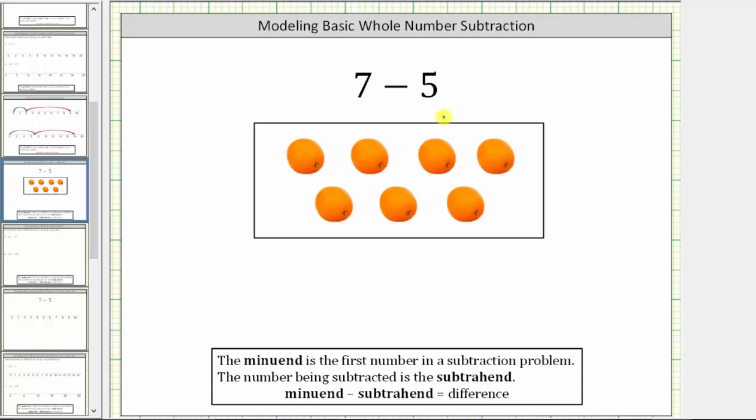One way to model subtraction is to first model the first number or the minuend. Notice here we have a 7. We can model 7 using 7 oranges as shown here.